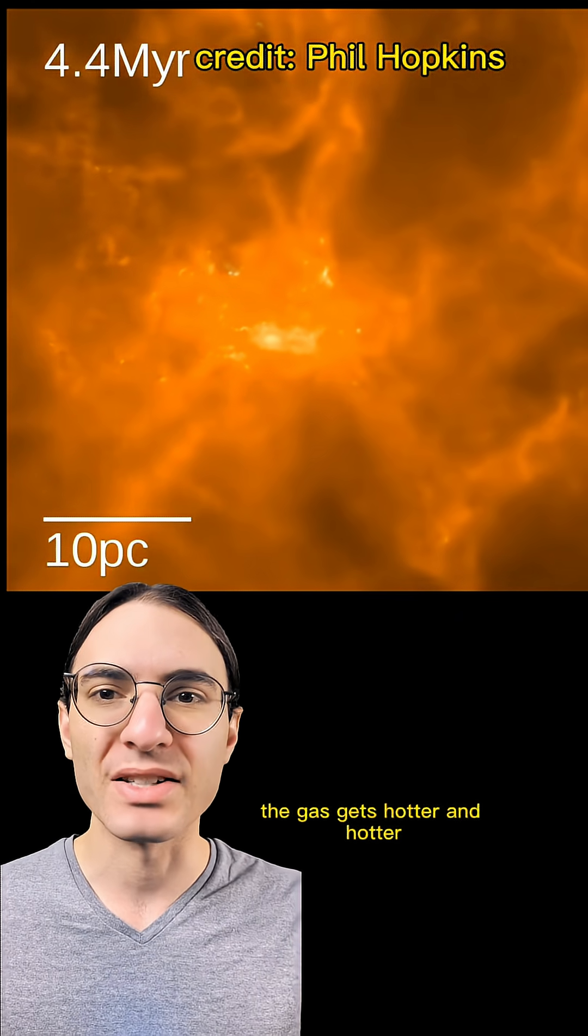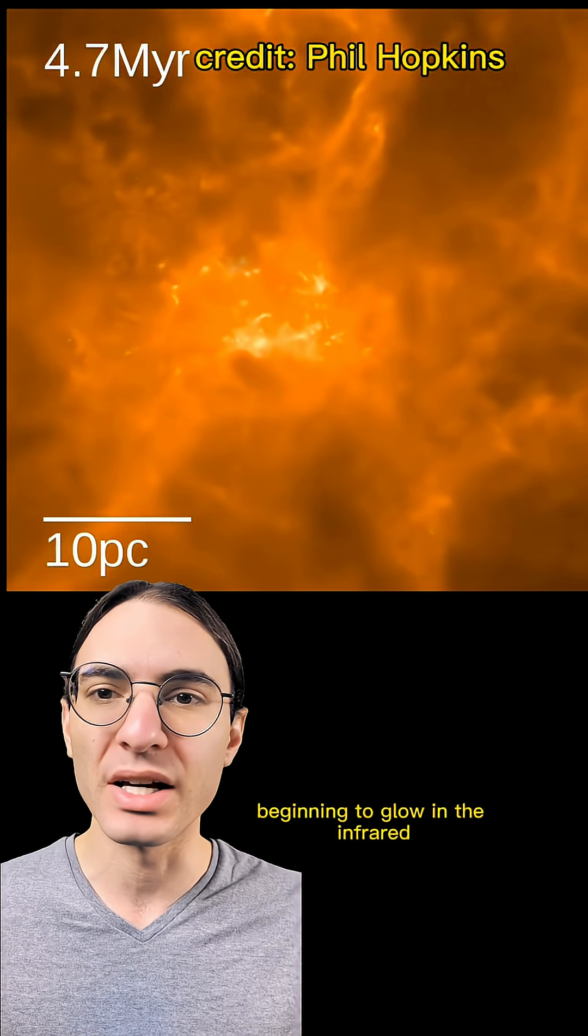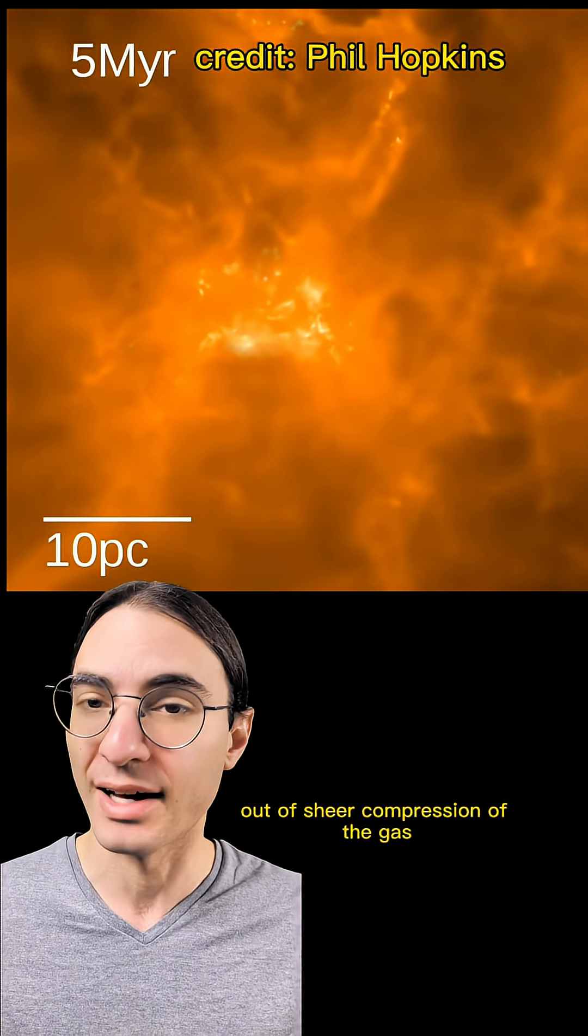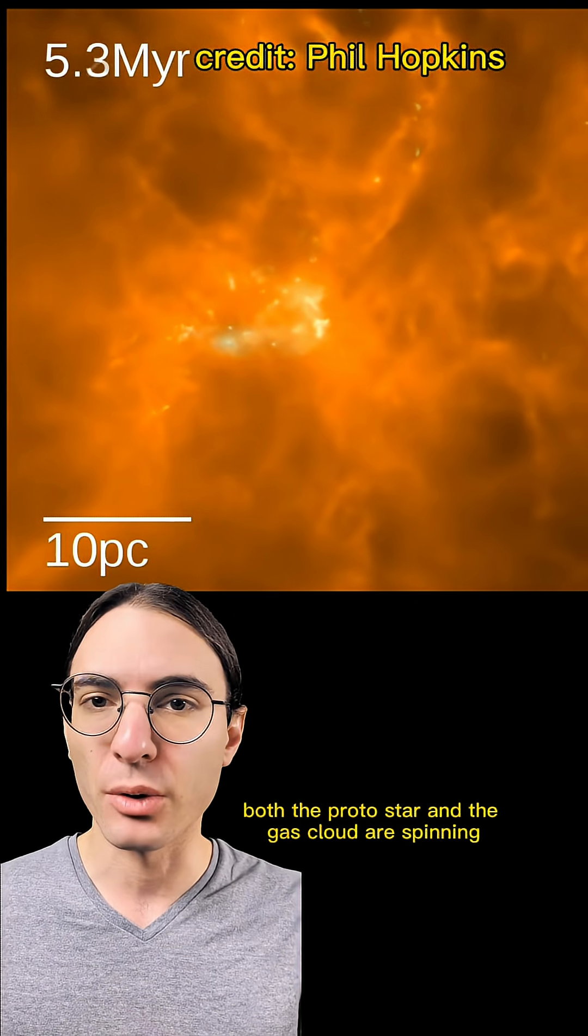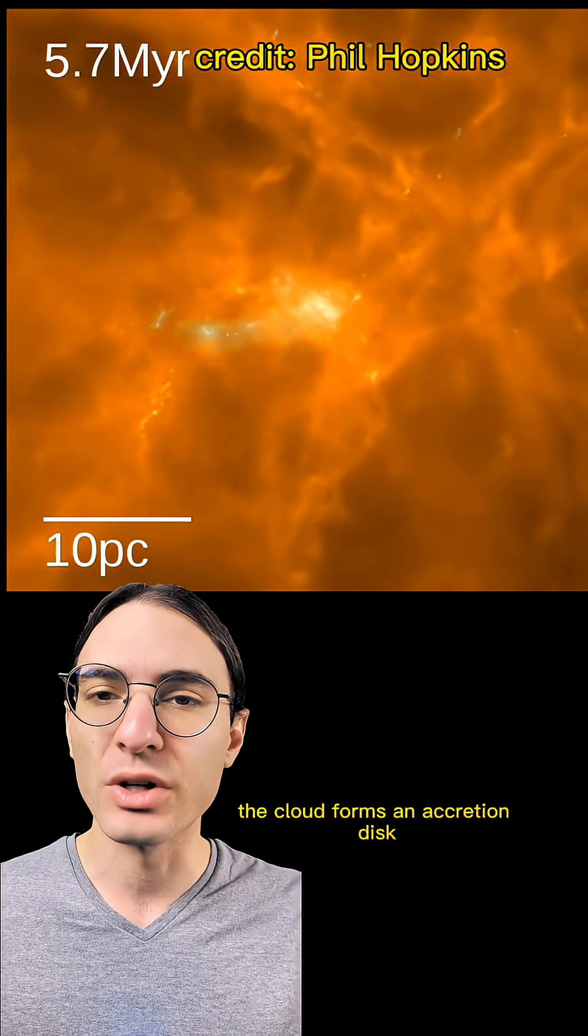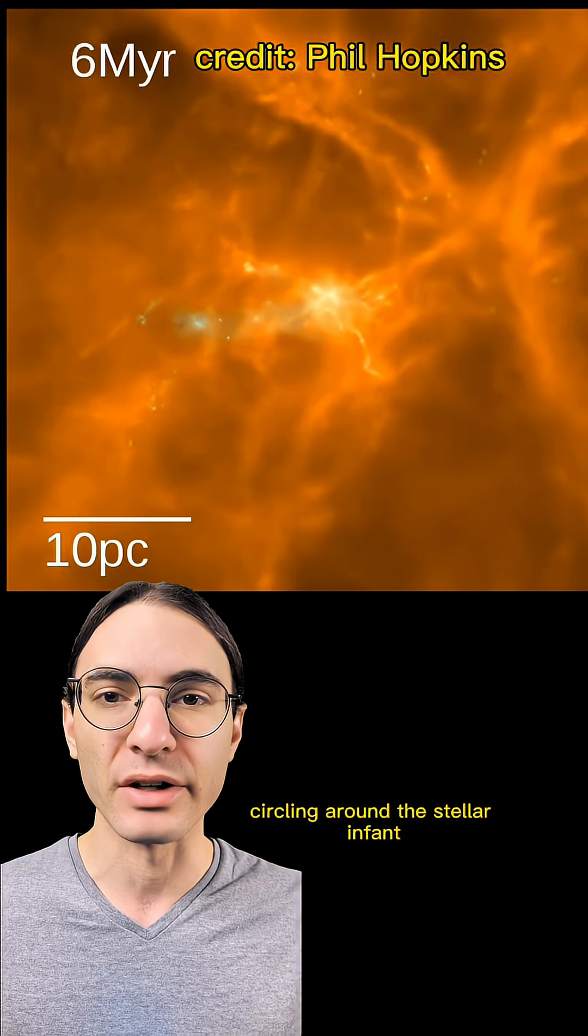At the center of the collapse, the gas gets hotter and hotter, beginning to glow in the infrared out of sheer compression of the gas. As inevitably both the protostar and the gas cloud are spinning, the cloud forms an accretion disk circling around the stellar infant.